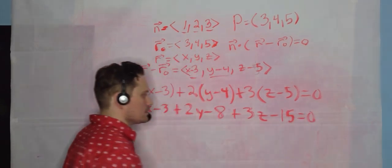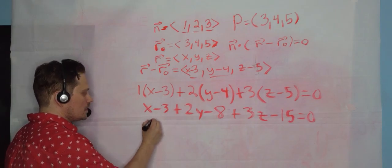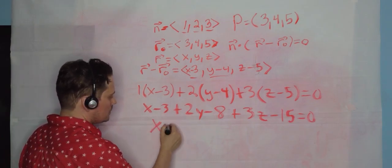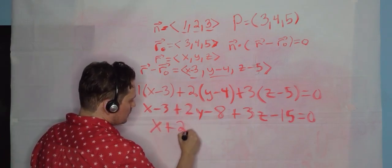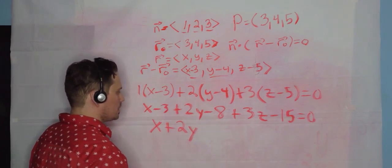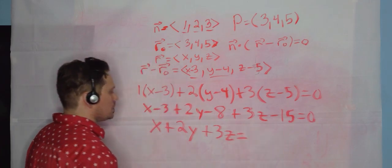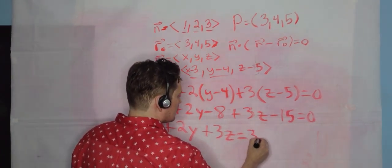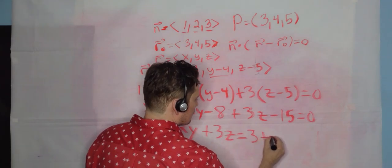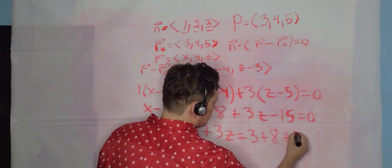And the whole thing is equal to 0. And then you work through this, so it's going to be an x from here, a 2y from here, and then a 3z from here.